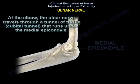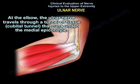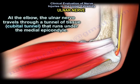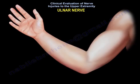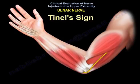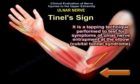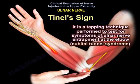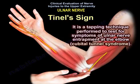At the elbow, the ulnar nerve travels through a tunnel of tissue called the cubital tunnel, which runs under the medial epicondyle. Tinel's sign is a tapping technique performed to test for symptoms of ulnar nerve entrapment at the elbow, specifically for cubital tunnel syndrome.